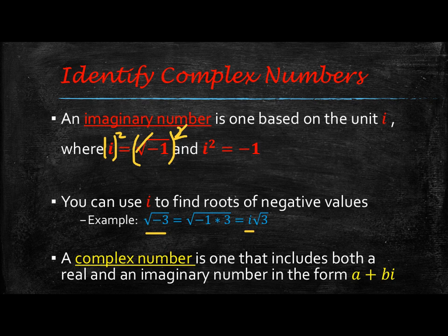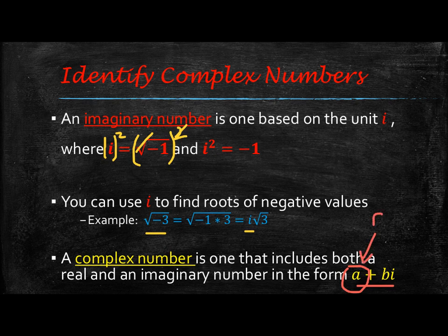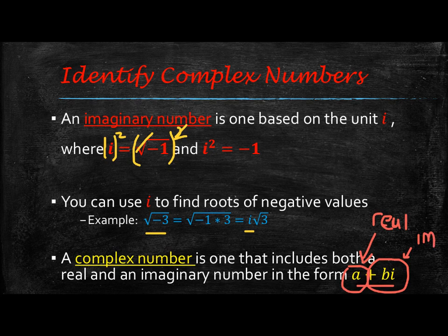We also have what's called a complex number. A complex number is one that includes both a real number and an imaginary number. We write this in the form a plus bi. The front part, a, is our real number, and the back part, plus bi, is our imaginary part.